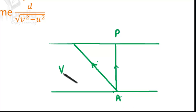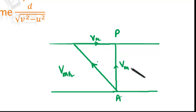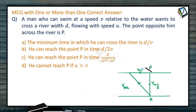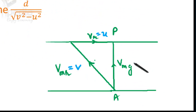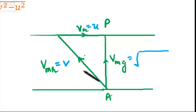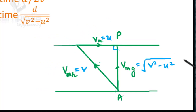This is the velocity of the man with respect to the river. This is the velocity of the river. This is the velocity of the man with respect to the ground. The velocity of the river is U, and the velocity of the man relative to water is V. Since this forms a right-angle triangle, the velocity of the man with respect to ground is √(V²−U²).